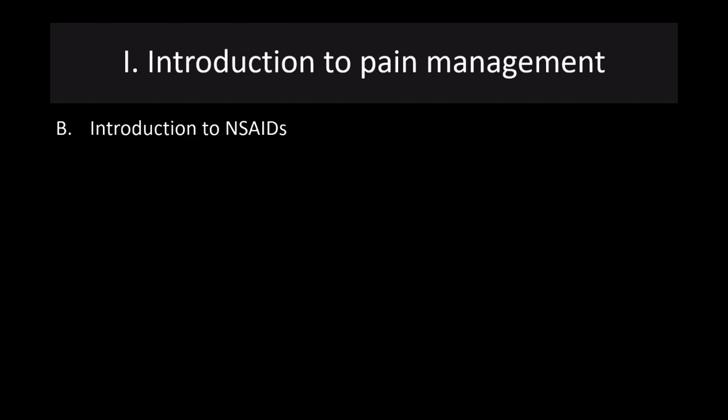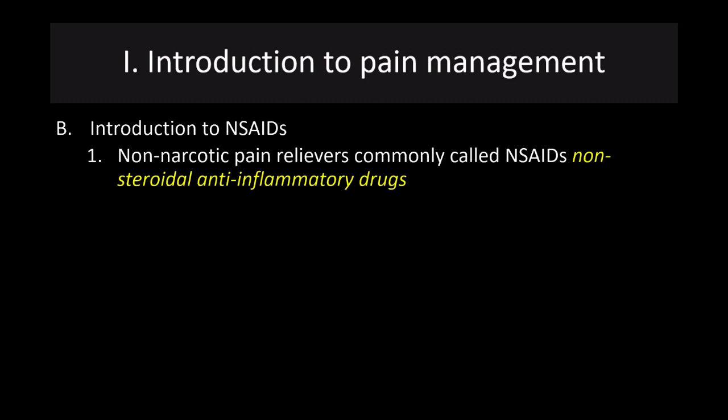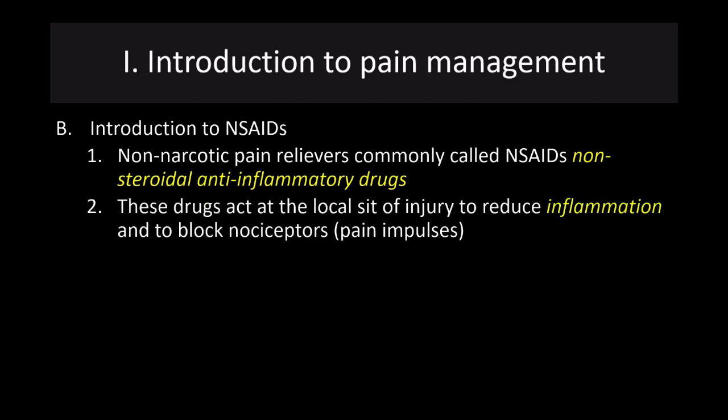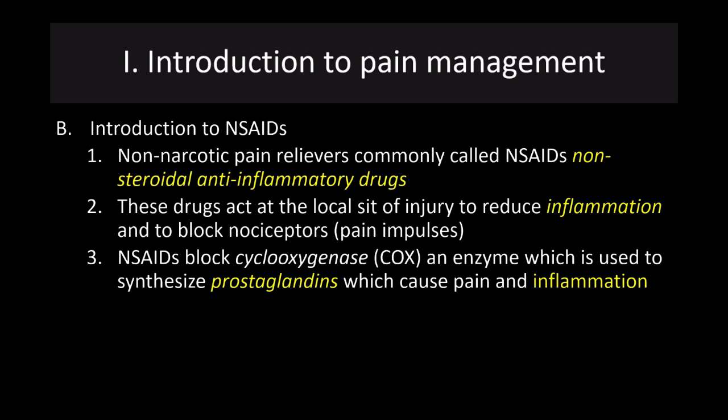Let's start with non-steroidal anti-inflammatory drugs, or NSAIDs. These drugs act at the local site of injury to reduce inflammation and to block the pain receptors themselves. They block cyclooxygenase — an enzyme used to synthesize prostaglandins. Prostaglandins are released by the immune system and can cause pain, inflammation, and fever. These drugs are used to block that immune response, and are often referred to as COX inhibitors.